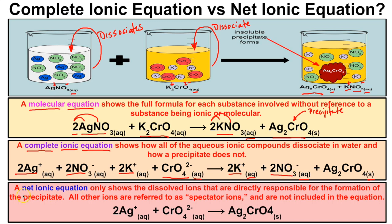From the complete ionic equation we can write a net ionic equation. A net ionic equation shows the dissolved ions that are directly responsible for the formation of the precipitate. Looking at the complete ionic equation, the ions directly responsible for forming silver chromate are the silver ions and the chromate ions.